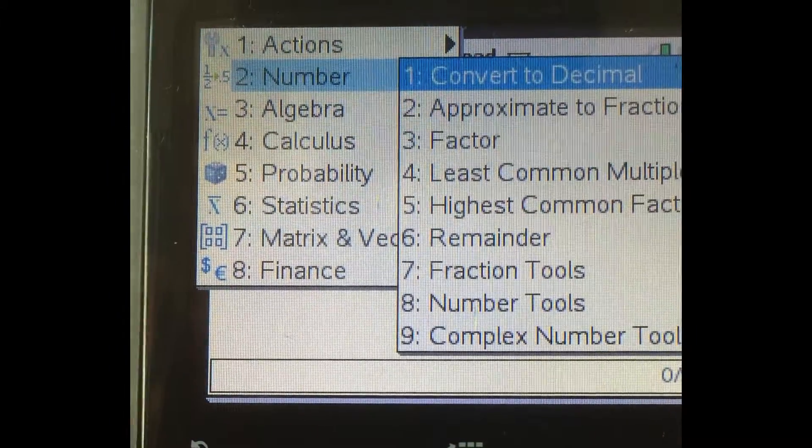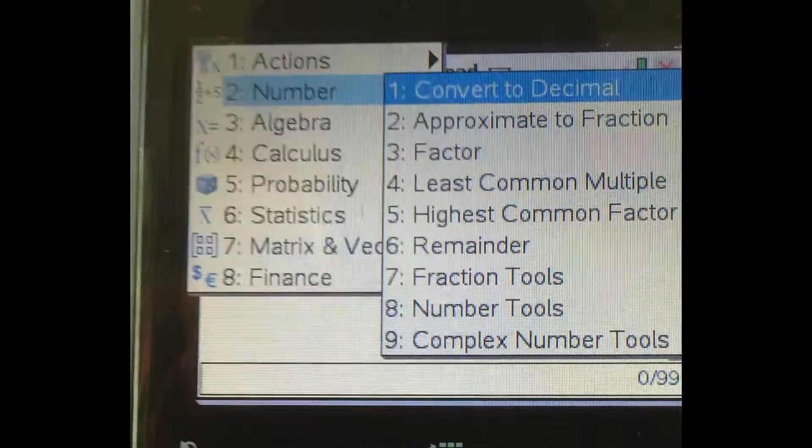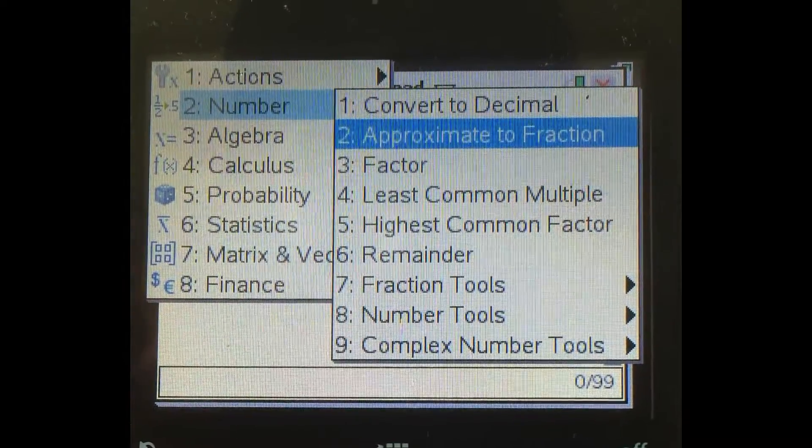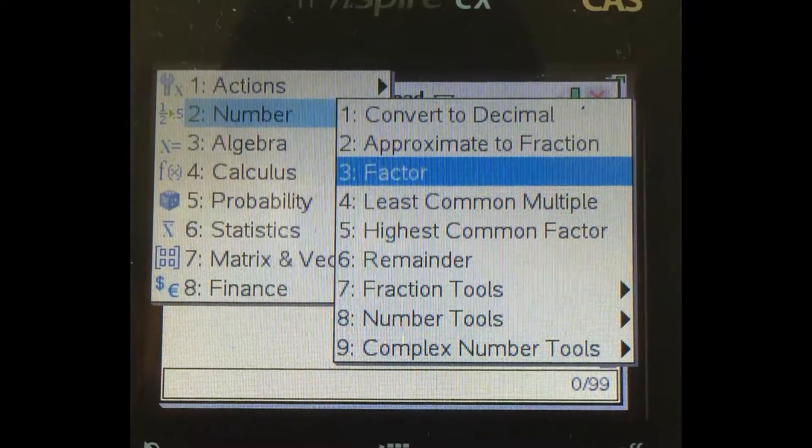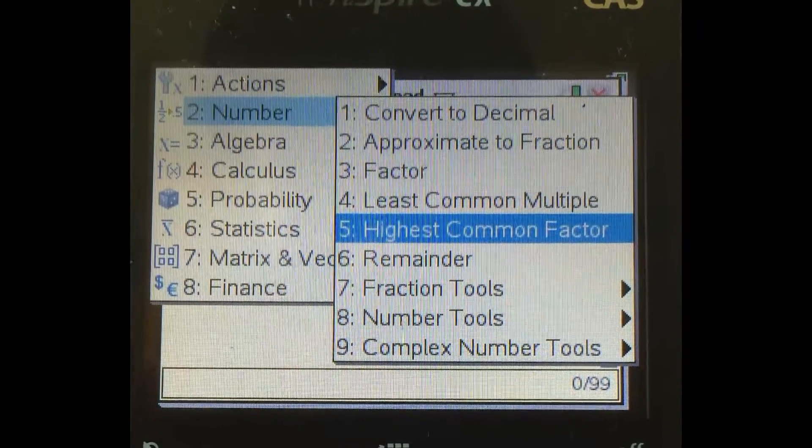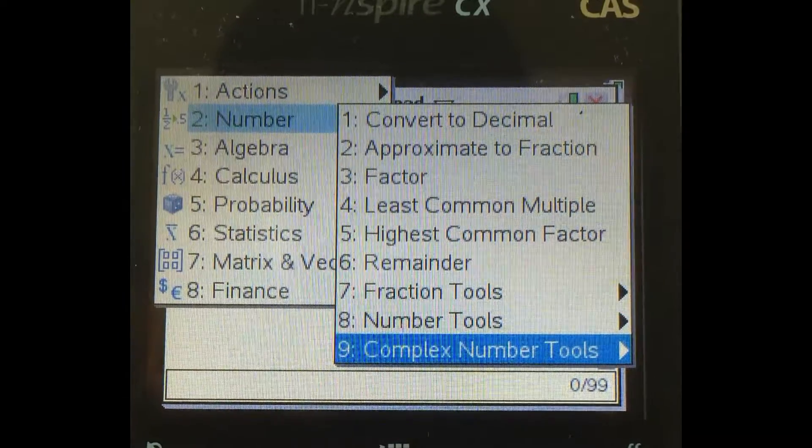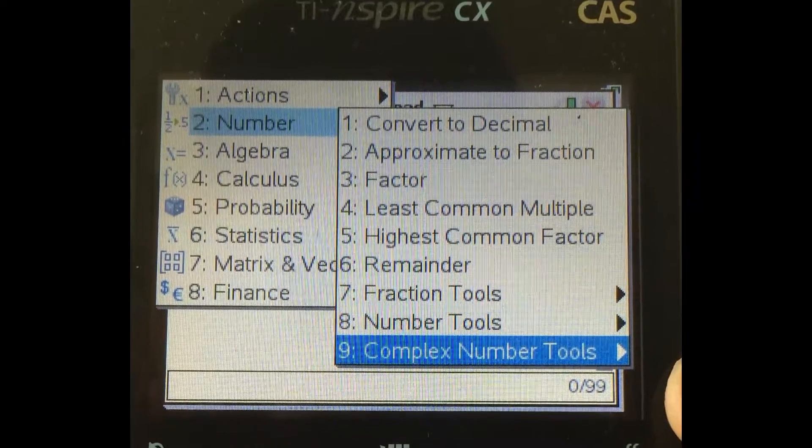So starting off with number, you can do things like convert to decimal, which is essentially the approximate. You can approximate the value to a fraction. You can factorize something into its primes, least common multiple, all of this. But the most important that you'll be using is complex number tools.